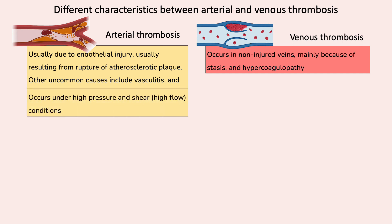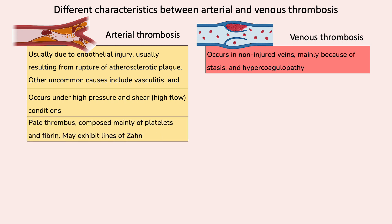Arterial thrombosis forms within a high-pressure state with high flow and shear stress. Because arterial thrombosis forms in rapidly moving blood, red cells tend to be washed away and the thrombus is mainly composed of platelets and fibrin. Occasionally, large arterial mural thrombi that form in the cardiac chambers and aorta may show alternating layers of red cells and platelets, which are called lines of Zahn.